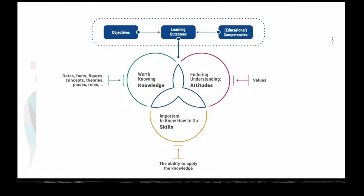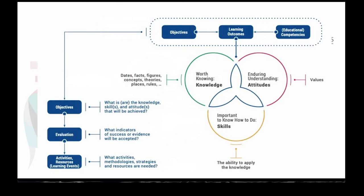If we take knowledge, skills, and attitudes — the combination of these three — they are really the objectives in education, sometimes called learning outcomes or educational competencies. Once we have those objectives in place, we can think about backward design or understanding by design, which means we need to know our objectives first: what knowledge, what skills, what attitudes? So that we can think about how we're going to evaluate that and then what activities we do.